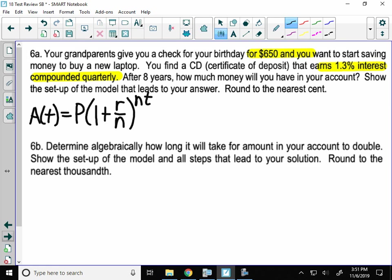Alright, let's figure out what we know. We want to know the amount in our account after 8 years equals P, the principal, or the starting amount, which is $650, times 1 plus our interest rate R, written as a decimal. And 1.3% is 0.013 over N. The number of compounds in the year for quarterly is 4.